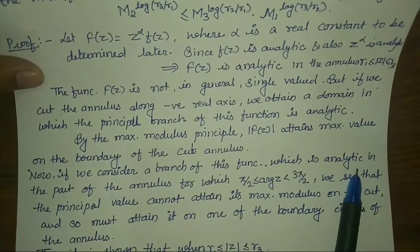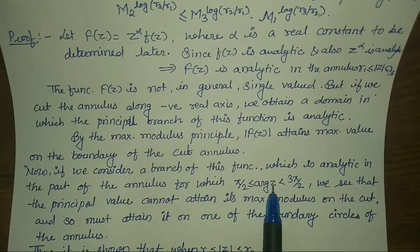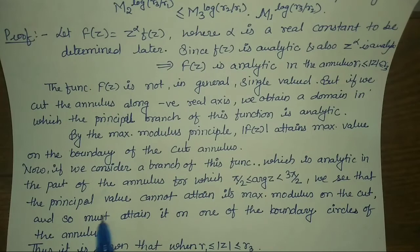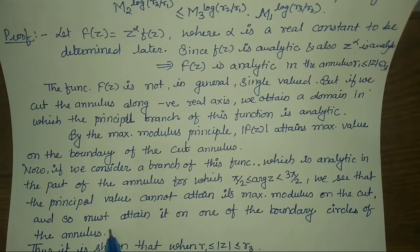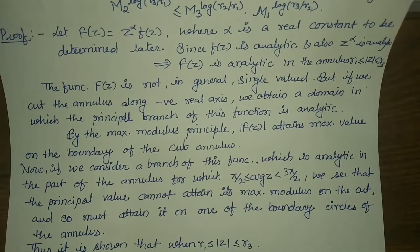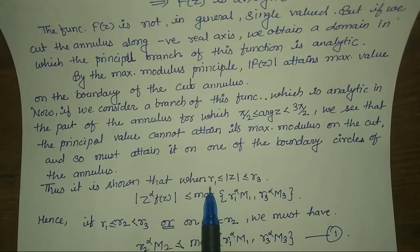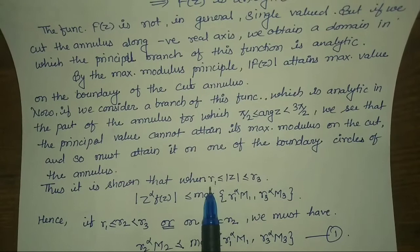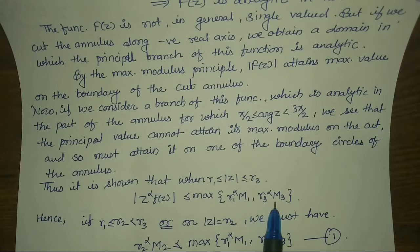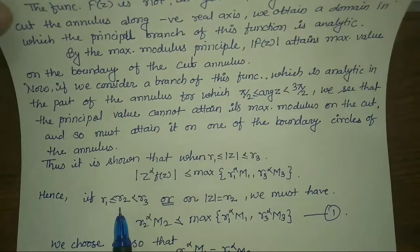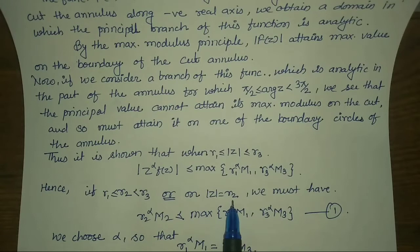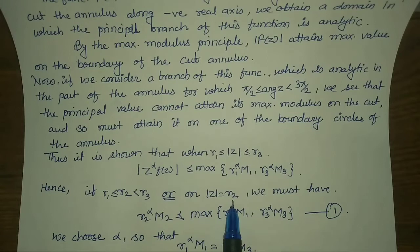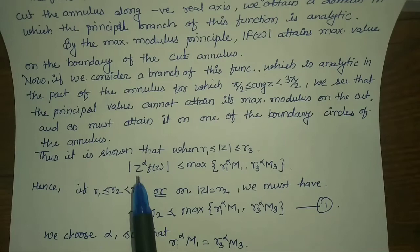If we consider a branch of this function which is analytic in the part of the annulus for which the argument of z lies between pi/2 and 3pi/2, then the principal value cannot attain its maximum modulus on the cut, and so must attain it on one of the boundary circles of the annulus. Thus it is shown that when mod z lies between R1 and R3, we have mod z to the power alpha times f(z) is less than or equal to the maximum of R1 to the power alpha times M1, and R3 to the power alpha times M3. Hence, if R2 lies between R1 and R3, on the circle mod z equals R2, we must have R2 to the power alpha times M2 less than or equal to the maximum of R1 to the power alpha times M1 and R3 to the power alpha times M3.